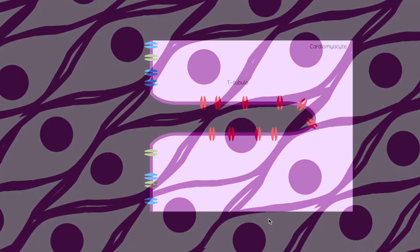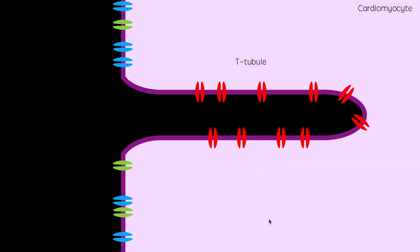Now, looking closer at the cardiomyocytes, these cells have multiple invaginations known as T tubules which are packed with calcium channels in order to bring the calcium closer to the contractile machinery within the cell.